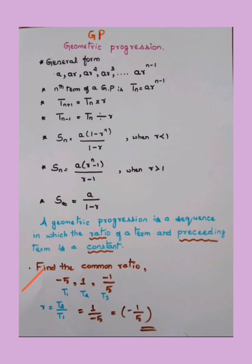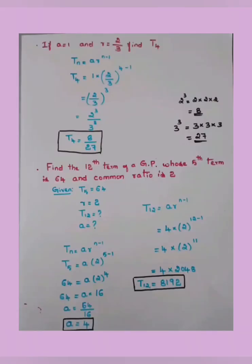Let's move into the numericals. Problem 1: Find the common ratio for the sequence −5, 1, −1/5. Three terms are given: T1, T2, T3. To find the common ratio, take the ratio of a term and its preceding term. Taking T2 ÷ T1: 1 ÷ (−5) = −1/5. So the common ratio r = −1/5.